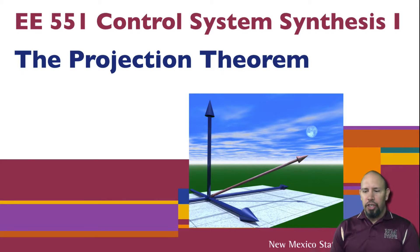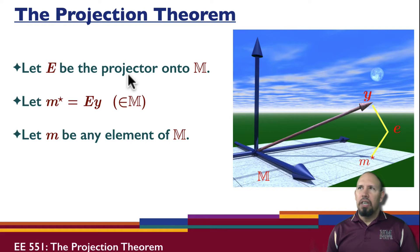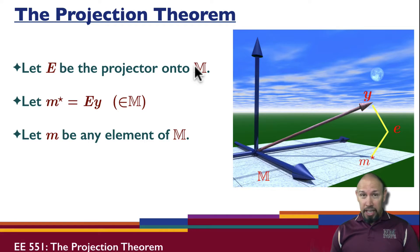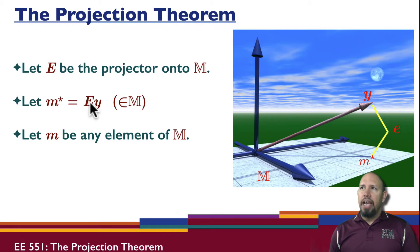We're going to move on to talk about the projection theorem. In looking at the projection theorem, we're going to let E be the projection operator — the self-adjoint projection operator — onto M. Remember, we said that for any subspace there is a projector that projects the entire space onto the subspace. So we're going to now define M star to be the projection of Y onto the subspace, and E does that projection.